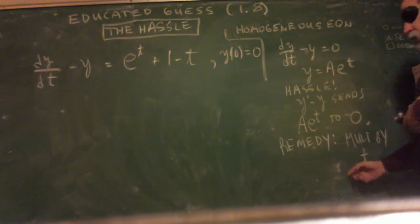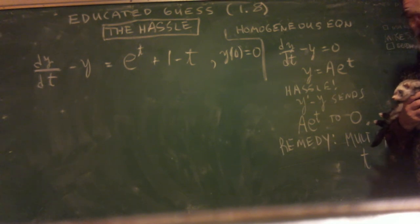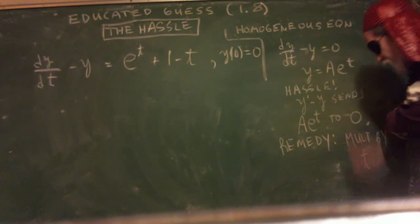And the remedy is simple. Multiply by an extra t. Isn't that great? That's an easy fix. And why does it work? Well, think of the product rule. When you take the derivative, well, let's write it all down for you.